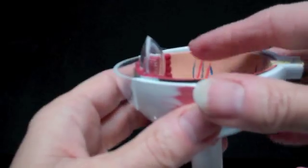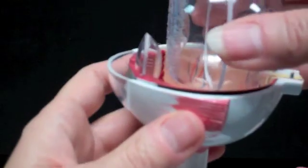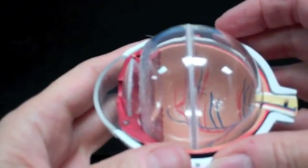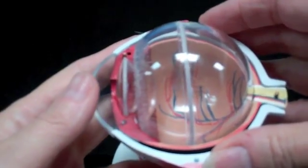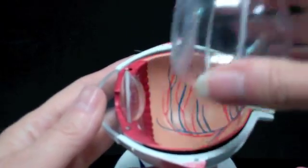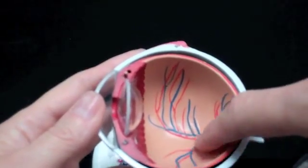The posterior cavity is filled by the vitreous body, which gives shape to the posterior of the eye and exerts a slight amount of pressure on the retina, helping to keep it intact.